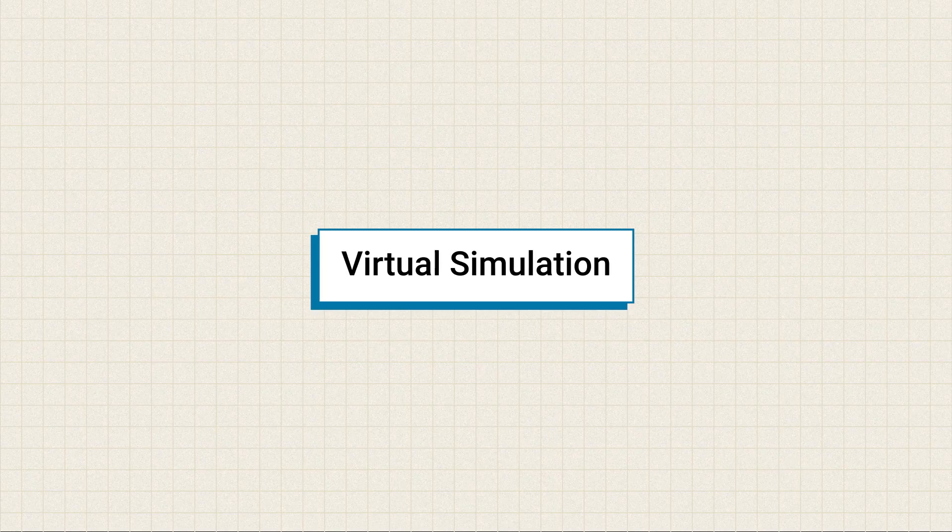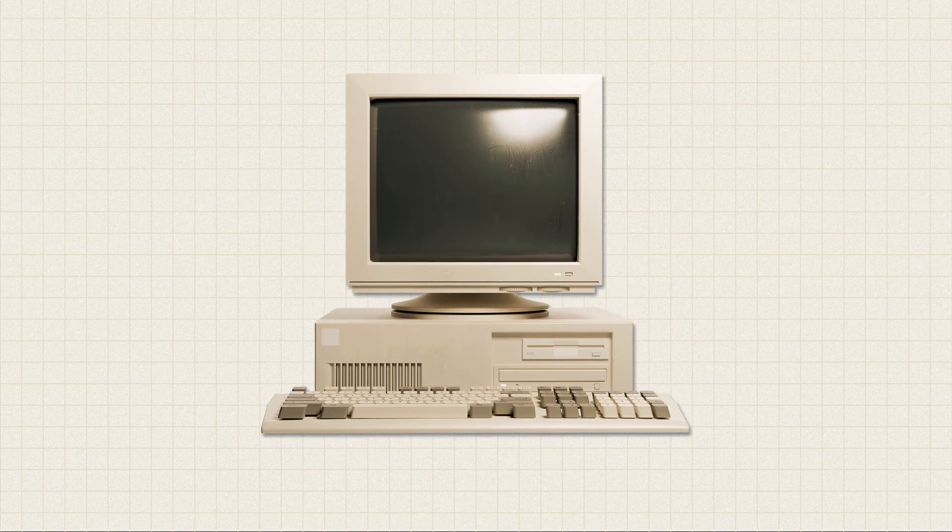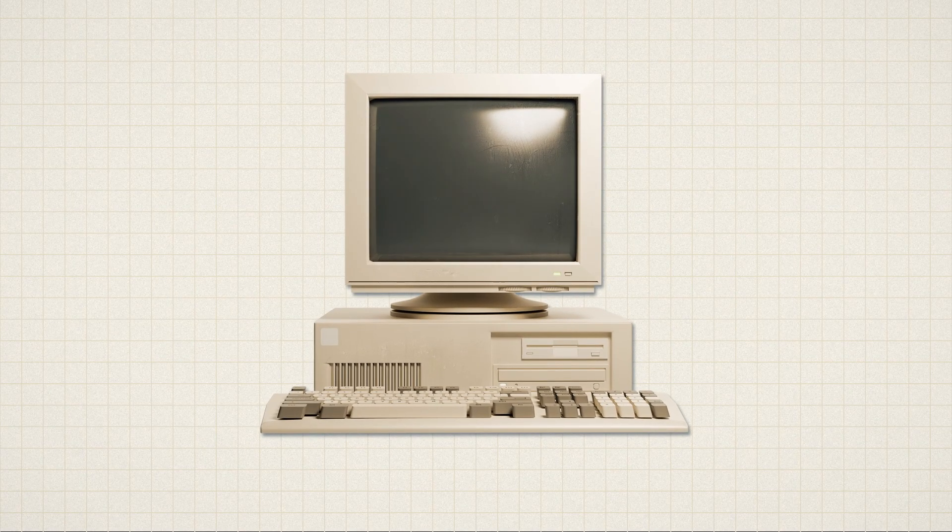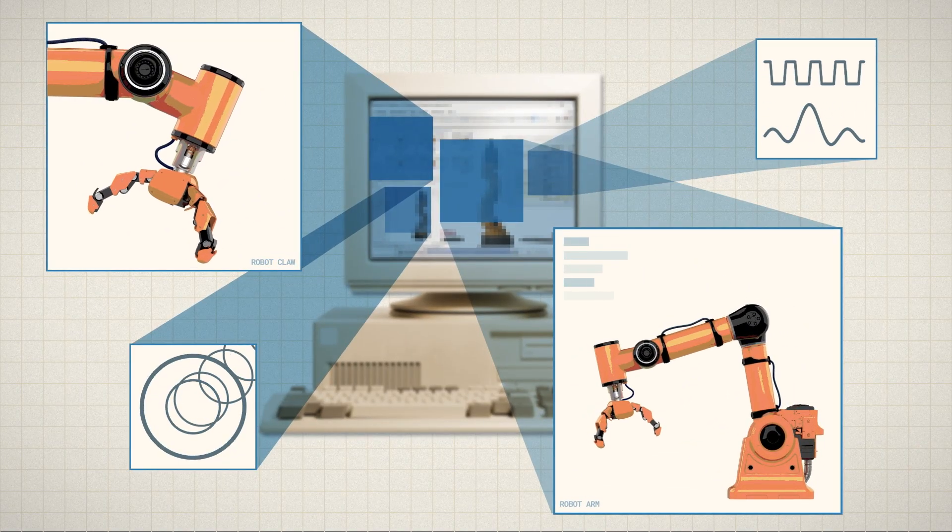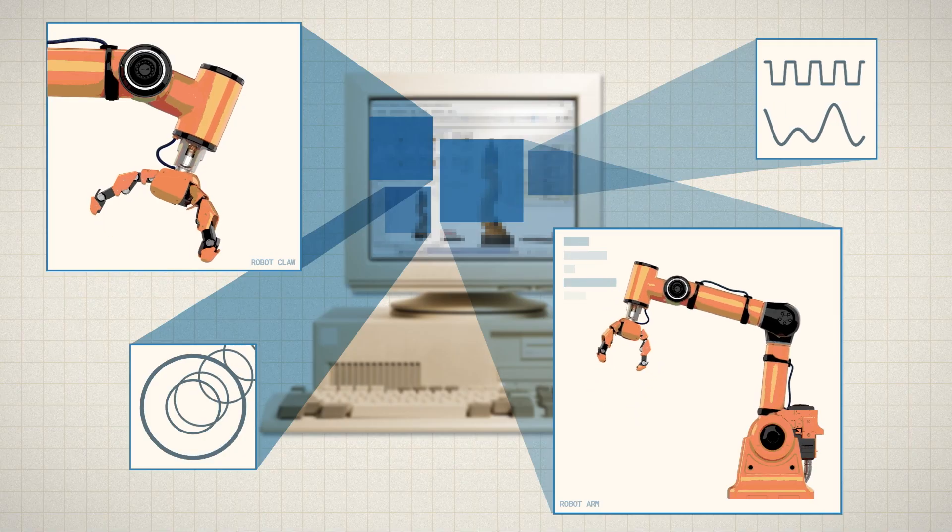Virtual simulations, on the other hand, are where a computer is used to play out a scenario. An example would be a digital twin of a real robot arm that models how different components work together before assembly.